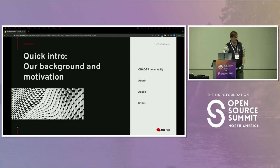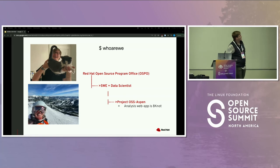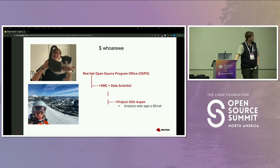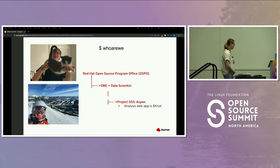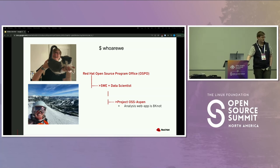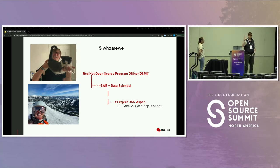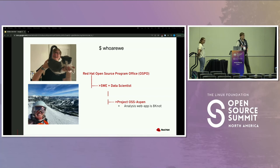A little bit of background about Callie and I before we get into our conversation. We are part of Red Hat's open source program office in the community data team. My name is James Kunstal, and I'm Callie Dolphy, a data scientist on the open source program office at Red Hat. For the last year or two, we've been working on a project focused on visualization and analysis of community data, which we've bootstrapped into a formal project with three components under the heading of OSS Aspen.